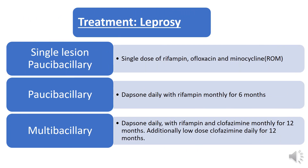Moving on to treatment: for a single lesion Pauci-bacillary, treatment is a single dose of rifampicin, ofloxacin, and minocycline. Pauci-bacillary leprosy is treated with dapsone daily plus rifampicin monthly for 6 months. Multi-bacillary leprosy is treated with dapsone daily plus rifampicin and clofazimine monthly for 12 months, and additionally low-dose clofazimine daily for 12 months. Thank you so much.